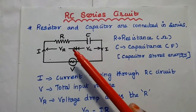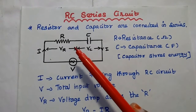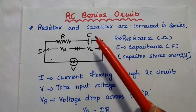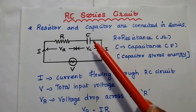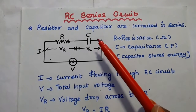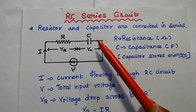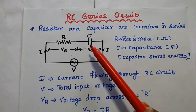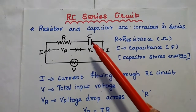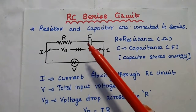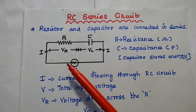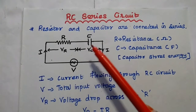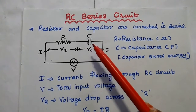Here R represents the resistance, its unit is ohm. C represents the capacitance, its unit is farad. Since these two elements are connected in series, the current is the same throughout, and voltage is divided across the elements.